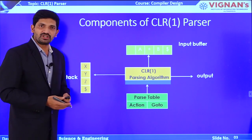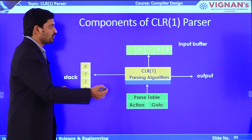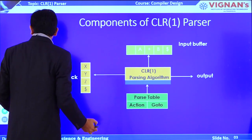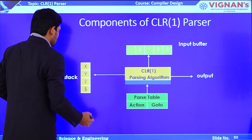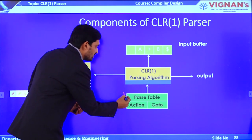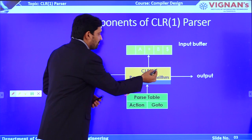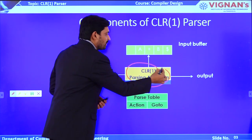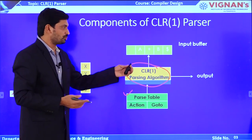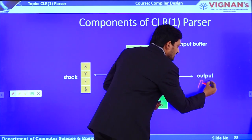Now, the components of the CLR 1 parser: the input is loaded to the input buffer, and by using the stack data structure with shift and reduce operations, including the parse table, the CLR 1 parsing algorithm performs CLR 1 parsing and generates the output — the parse tree or syntax tree.